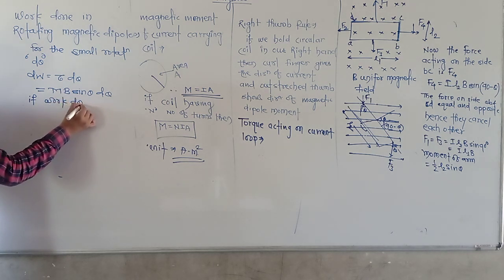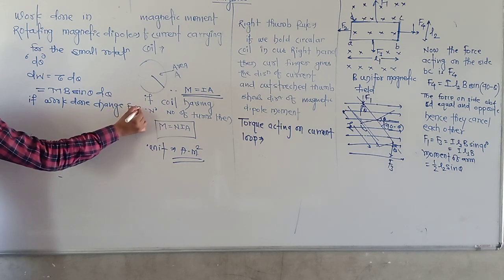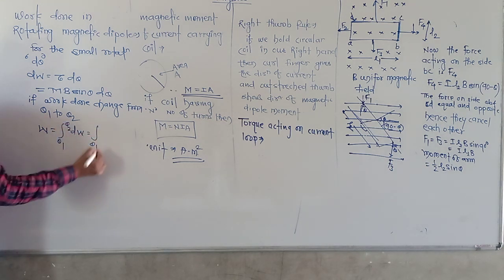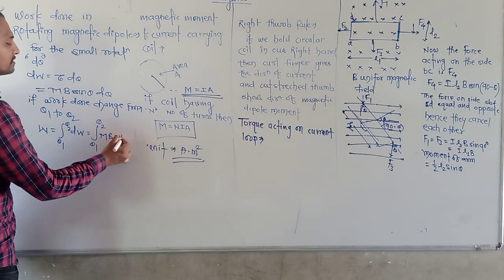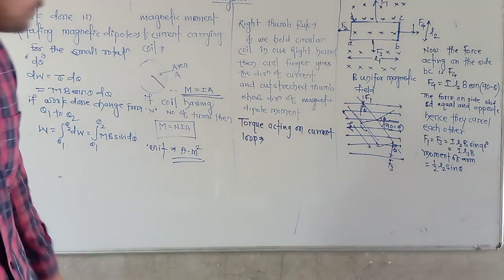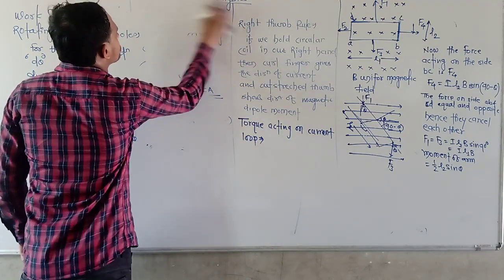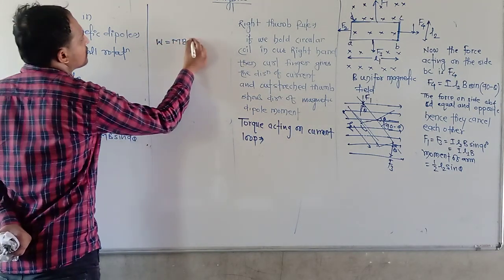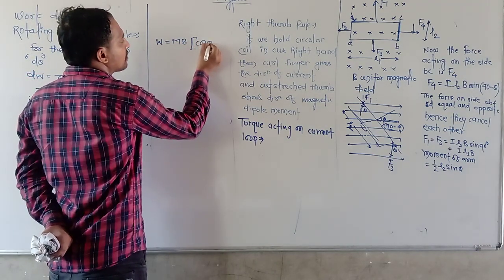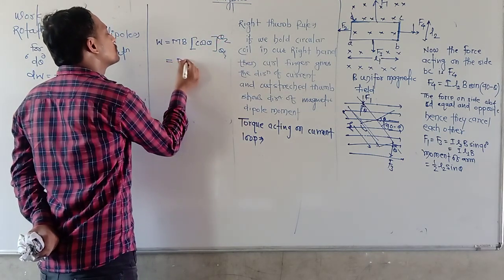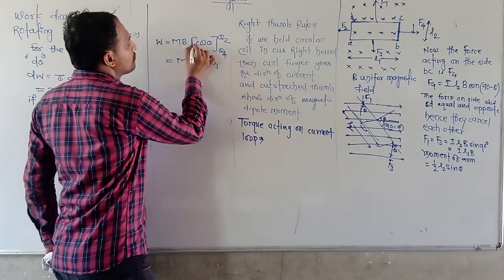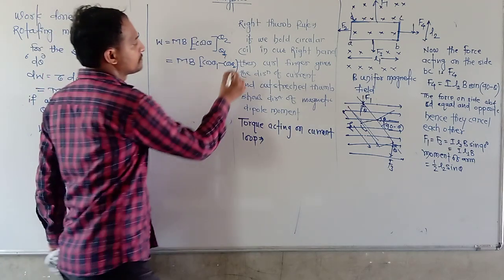If the angle changes from θ1 to θ2, the total work done W is the integral from θ1 to θ2 of MB sin θ dθ. Integrating, since the integral of sin θ is −cos θ, we get W equal to MB(cos θ1 − cos θ2).